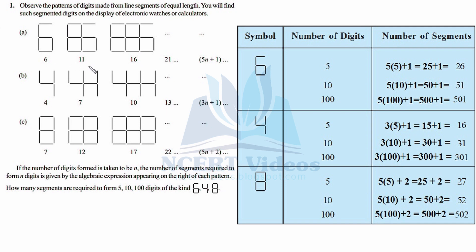For two digits we need 11 segments, not 12, because there is a common segment shared between the two 6s. This is why the question mentions segmented digits on calculators. Similarly for digits 4 and 8. Algebraic expressions help us find unknown quantities without actually drawing the digits. It would be tedious to draw these digits 100 times in order to count the segments. So algebraic expressions directly calculate unknown quantities.